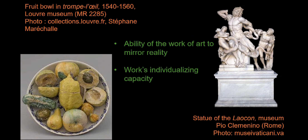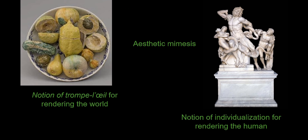According to Pliny, individualization is achieved through the meticulous rendering of hair, wrinkles, muscles and veins, but also through the ability to render feelings. The notion of aesthetic mimesis thus covers the notion of trompe-l'oeil in terms of rendering the world, and the notion of individualization in terms of rendering the human.